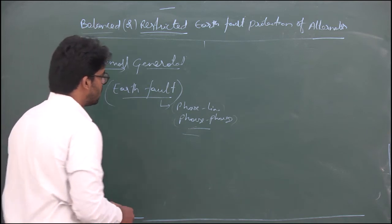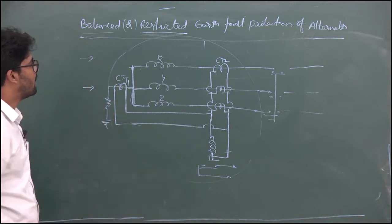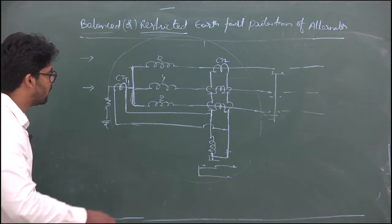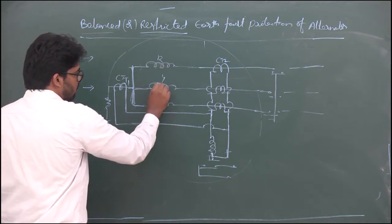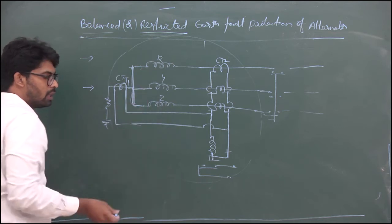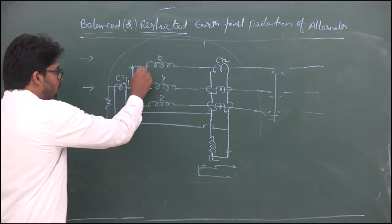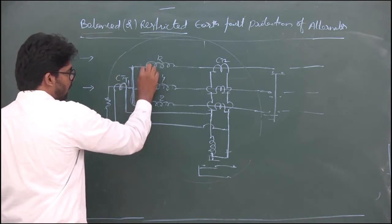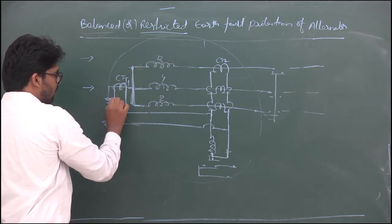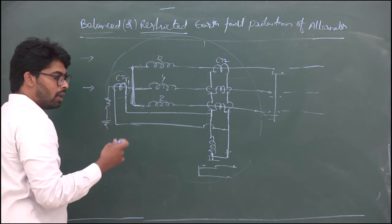The circuit configuration is given like this — this is the configuration of a balanced or restricted earth fault protection of an alternator. If you see carefully, these are the stator phases: this is the stator 3-phase, R phase, R/Y/B. Compared with differential protection and modified differential protection, we have individual CTs. Individual secondary CTs operate here, but the end terminals are connected together with one single CT, so the entire thing will be monitored by this CT only whenever a fault occurs.